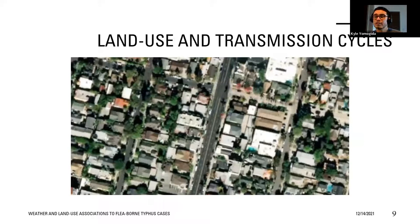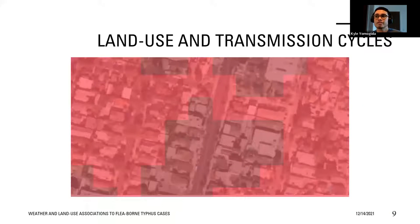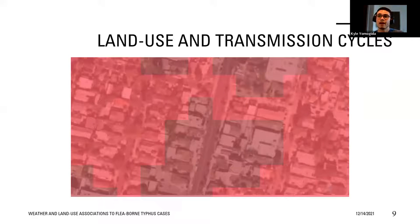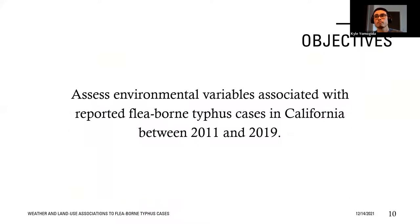The reference to suburban versus urban transmission cycles may be subjective in some areas where single-family homes are located near apartment buildings or businesses. Land use can serve as an objective classifier of urban density and land use types — such as single-family housing, apartment complexes, et cetera. We hypothesize that land use types consistent with suburban areas, such as single-family homes, larger parks, and more open space, would be at higher risk than urban areas for flea-borne typhus. This leads us to our objective: to assess the environmental variables associated with reported flea-borne typhus cases in California between 2011 and 2019.